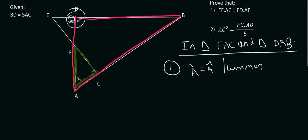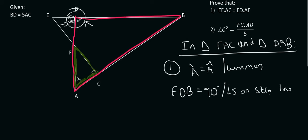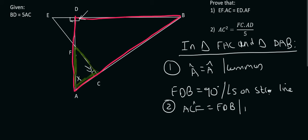For number two, if there is a right angle — I think it was erased during the previous question — then if that angle is 90 degrees, this angle here would also have to be 90 degrees. We should specify that in the test. So we can say that angle FDB — we can't just say D because that's not a single angle — is equal to 90. The reason is angles on a straight line, which have to add up to 180. Therefore angle ACF equals angle FDB.